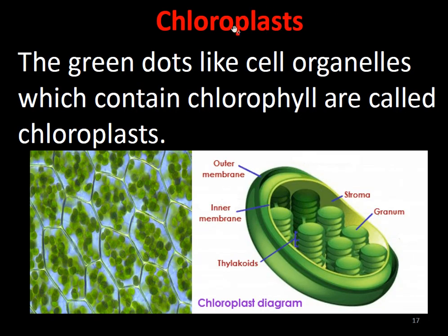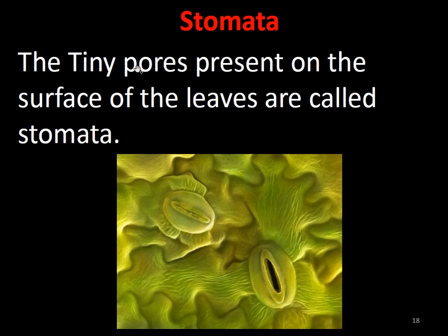Chloroplasts are the green dot-like structures — cell organelles arranged in layers called grana and stroma. The green dot-like cell organelles which contain chlorophyll are called chloroplasts.